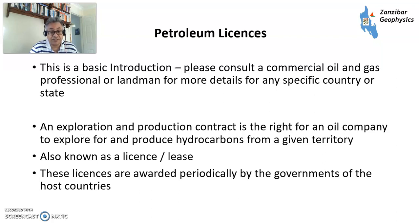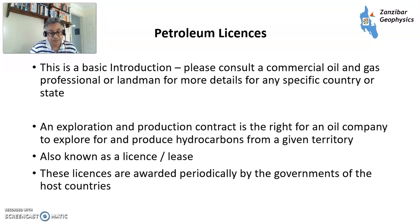An exploration production contract is the right for a company to explore for and produce hydrocarbons from any given territory. Also known as a license or lease — depending on where you are — and they're awarded periodically by governments of host countries. We're talking here about basically the world outside the United States, where you have private resource ownership.